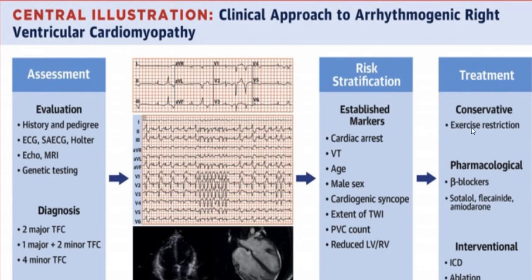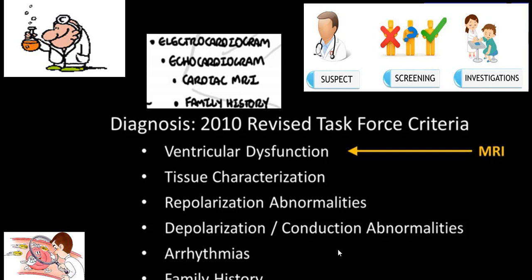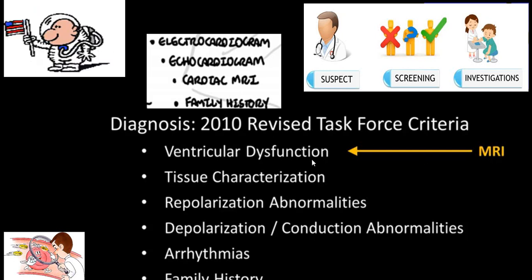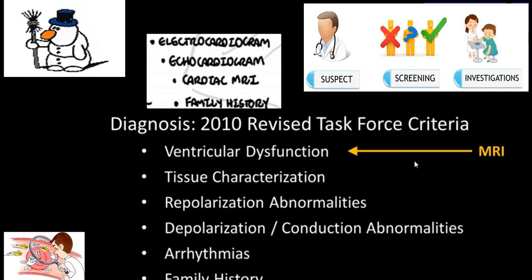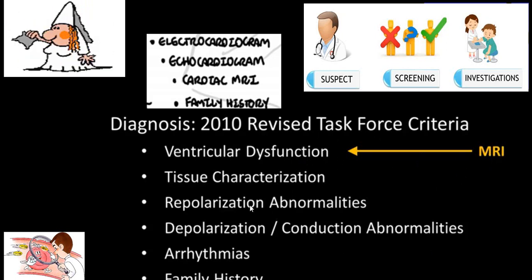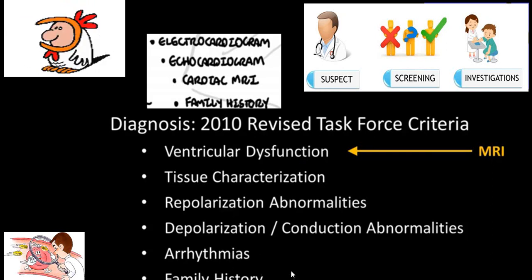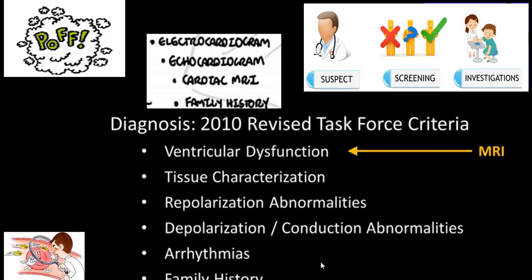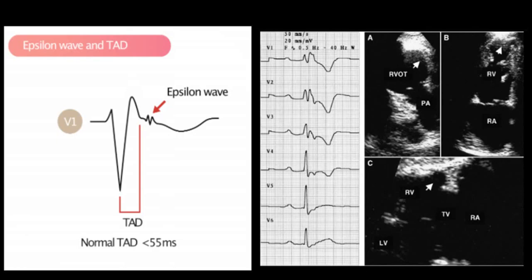The main treatment is conservative - restriction of exercise. Pharmacological treatment includes beta blockers, sotalol, amiodarone, or flecainide. If a person has a very high chance of tachyarrhythmias, ICD is indicated, and if not successful, ablation. Diagnosis is by revised Task Force criteria based on ventricular dysfunction demonstrated by cardiac MRI or echo, tissue by endomyocardial biopsy, ECG showing repolarization abnormality, depolarization/conduction abnormality, arrhythmias, and strong family history of sudden cardiac death in a young individual.